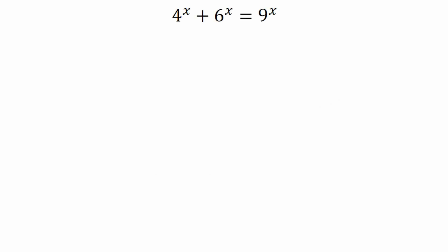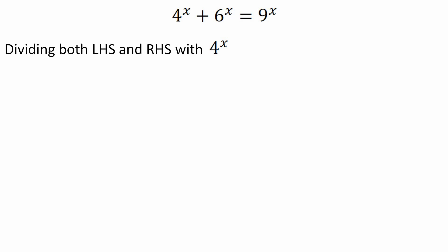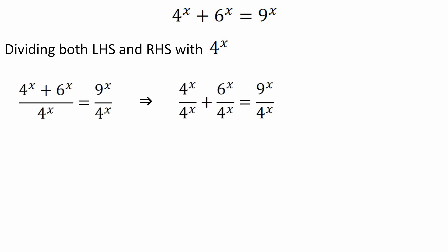Coming back to our original question: 4 to the power x plus 6 to the power x is equal to 9 to the power x. In the first step we will divide both the LHS and RHS by 4 to the power x. Dividing each expression by 4^x, we cancel out the first term and get: 1 plus (6/4) to the power x is equal to (9/4) to the power x.